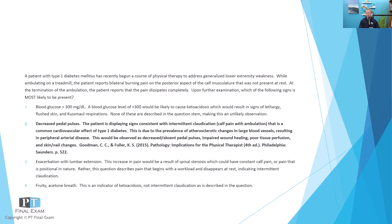The correct answer is decreased pedal pulses. When someone has pain during ambulation that dissipates completely with rest, that indicates intermittent claudication, and you would observe decreased pedal pulses. Another potential correct answer option could have been a decreased ankle-brachial index (ABI), which measures the disparity in blood pressure at the ankle compared to the brachial blood pressure. You'd see a decrease in ABI and a decrease in pedal pulses — really any indicator of blood flow to the lower extremity would show a decrease or change.